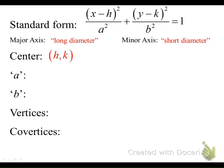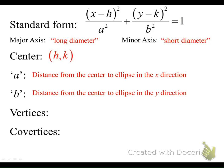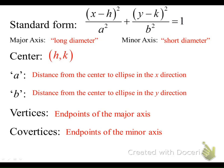The center, the same as circles, is going to be h and k as an ordered pair. You'll always use the opposite sign of anything coming out of or going back into the parentheses in this equation. The a squared value underneath the x term — when we take the square root of that — is the distance from the center to the ellipse in the x direction. The square root of b squared is the distance from the center to the ellipse in the y direction. Those points are called the vertices, which are the end points of the major axis, or the co-vertices, which are the end points of the minor axis.